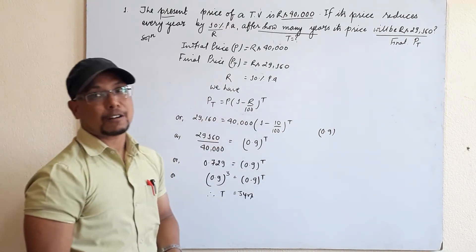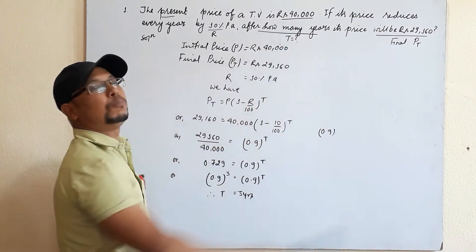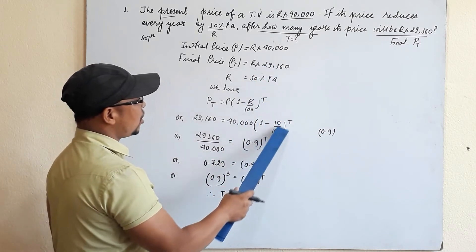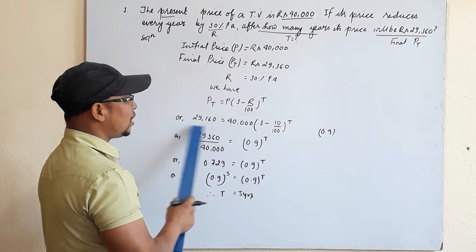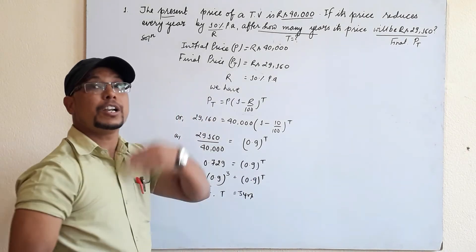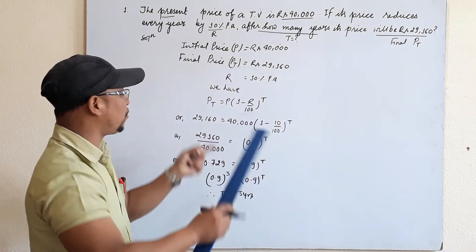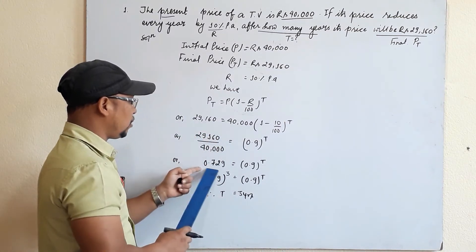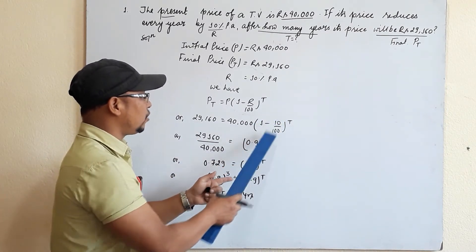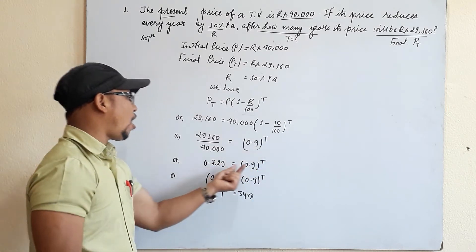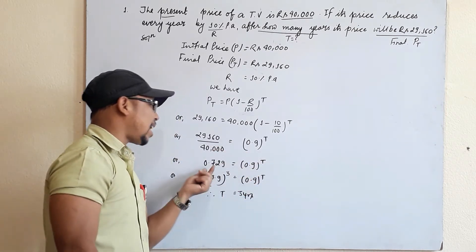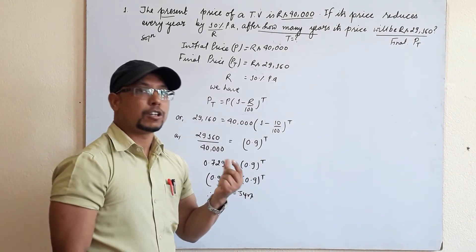Using the formula PT = P(1 − r/100)^T: 29,160 = 40,000 × (1 − 10/100)^T. Dividing both sides gives 0.729 = (0.9)^T. To find T, we need to express 0.729 as a power of 0.9. Since the bases must be the same, we use the indices method — if the bases are equal we can equate the exponents.